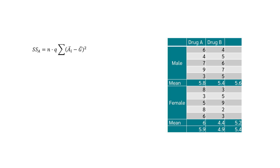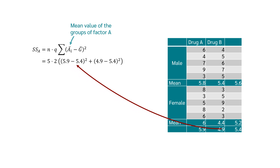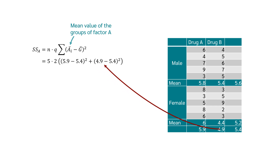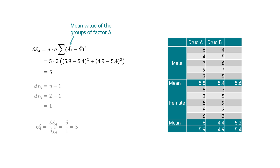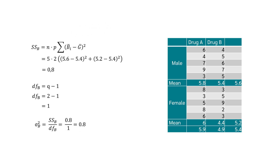Now we calculate the sum of squares of factor A. A-dash is the mean value of the categories of factor A. So we calculate 5.9 minus the total mean, and 4.9 minus the total mean. This results in a sum of squares of 5. Together with the degrees of freedom we get the variance for factor A equal to 5. We do the same for factor B, using the mean values of male and female, and we get a variance of 0.8.